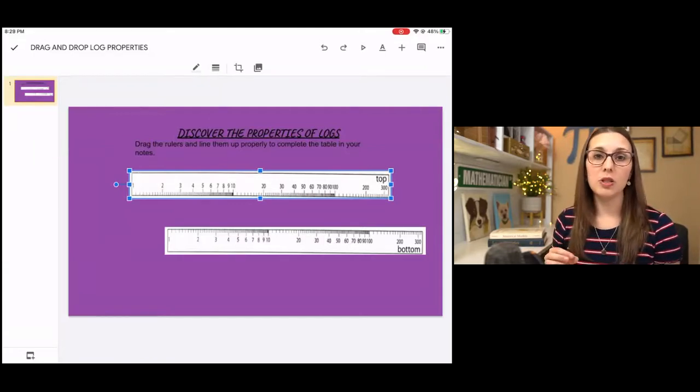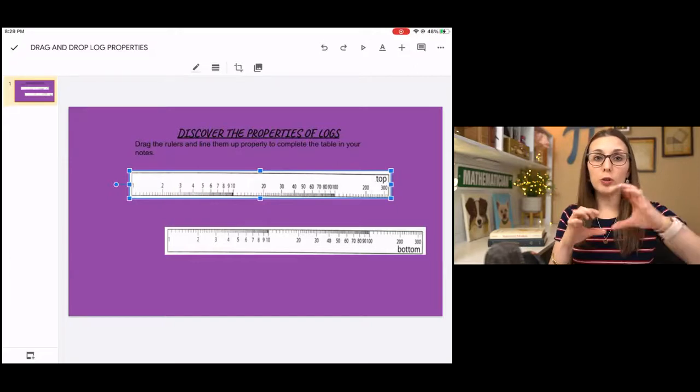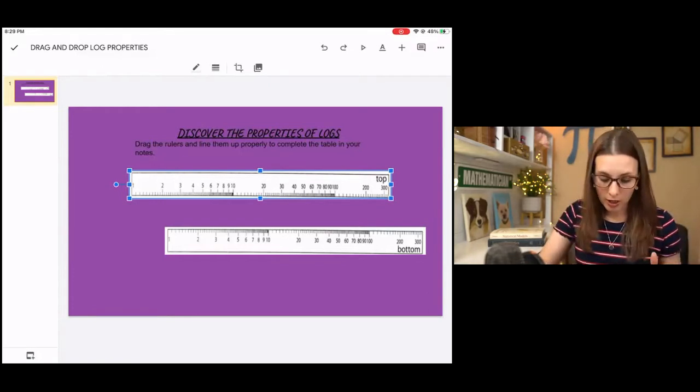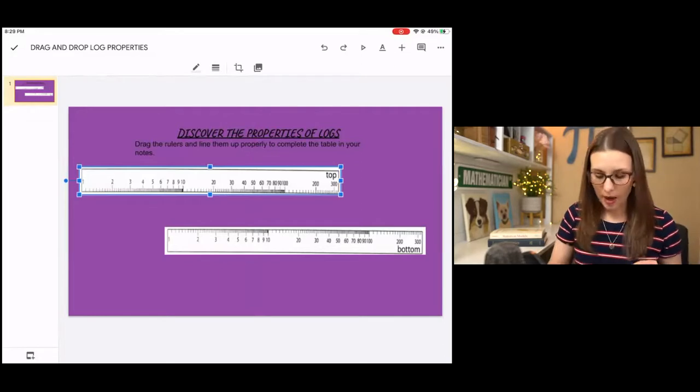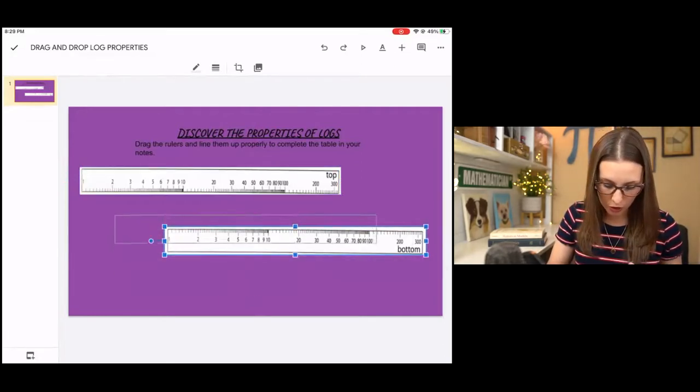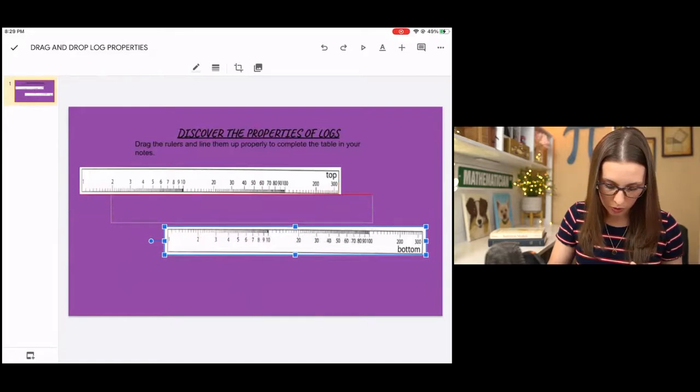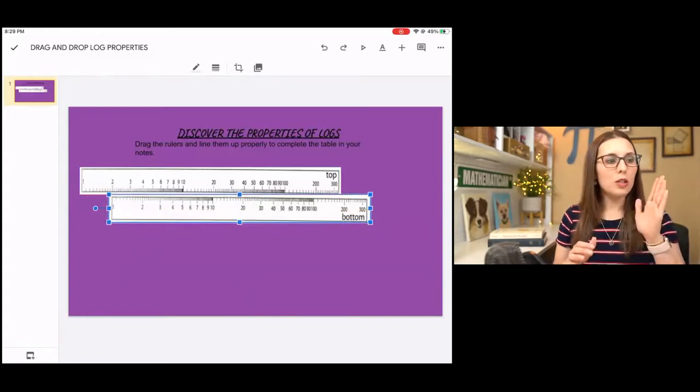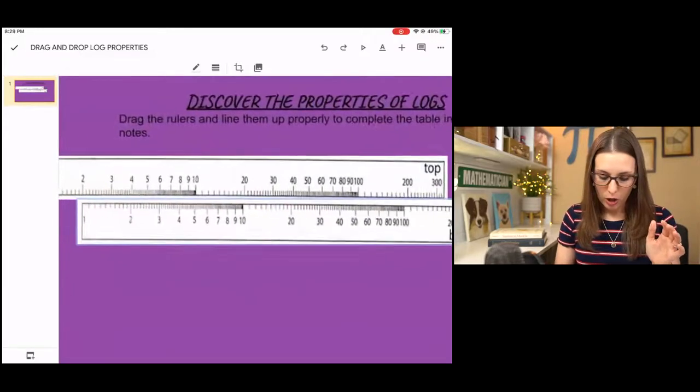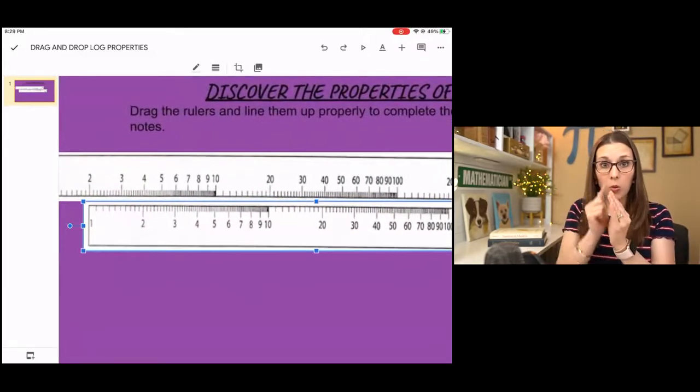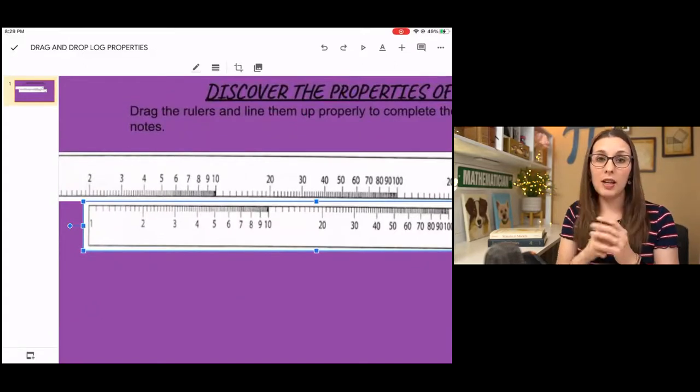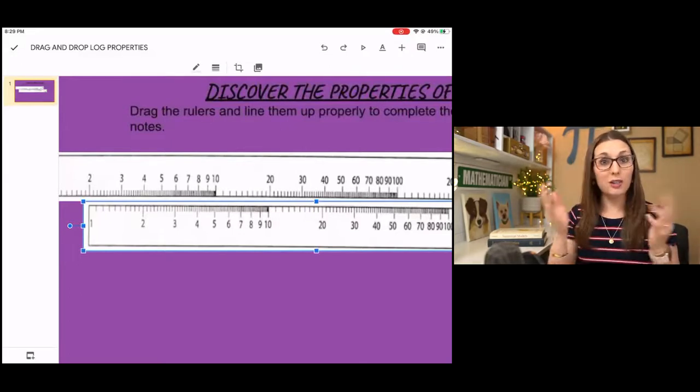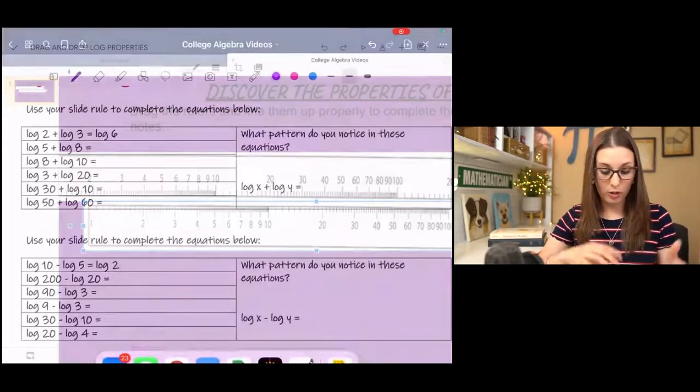In the first example, it says log 2 plus log 3. I'm using two different rulers. My starting point is log 2, and then below that, I'm going to line up my second ruler starting at log 2. Log 3 on the bottom lines up with 6 on the top, so log 2 plus log 3 gives us log 6.